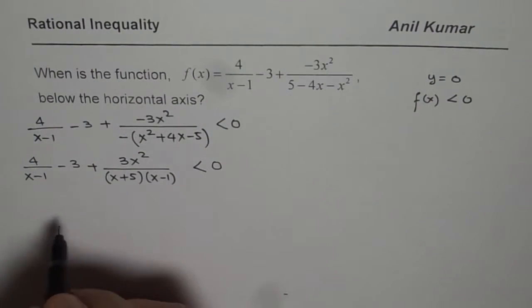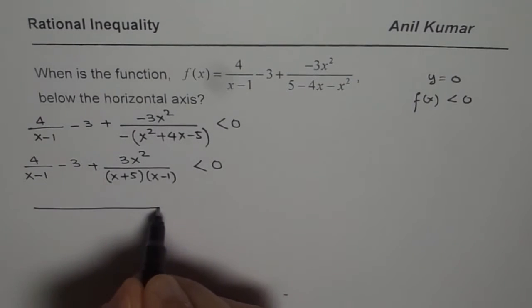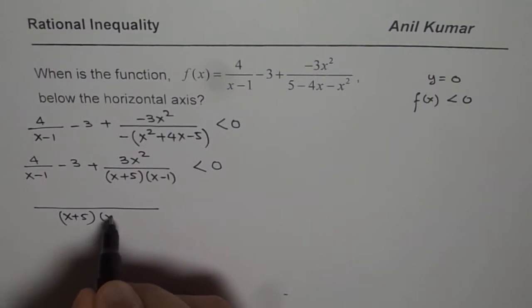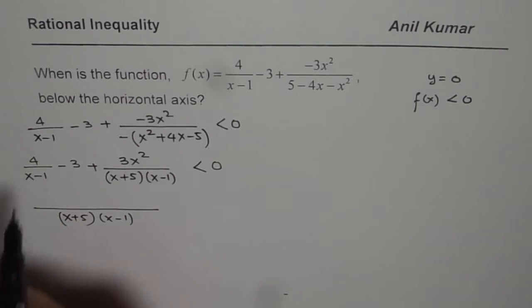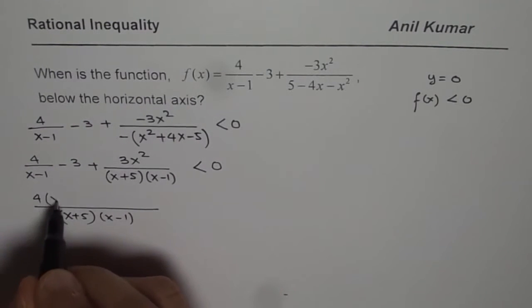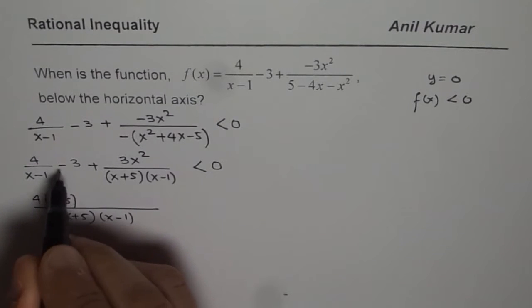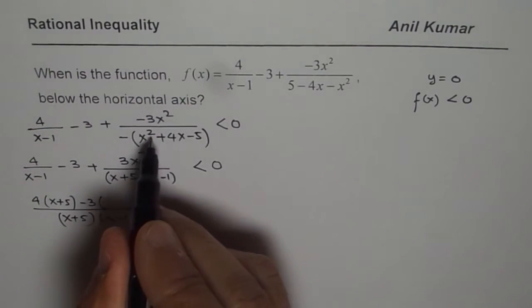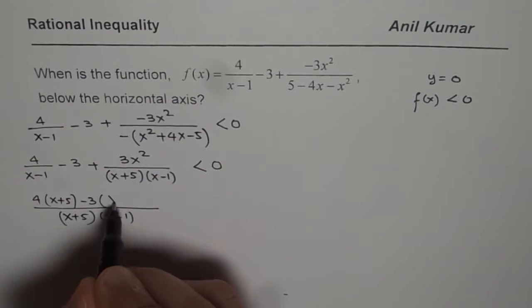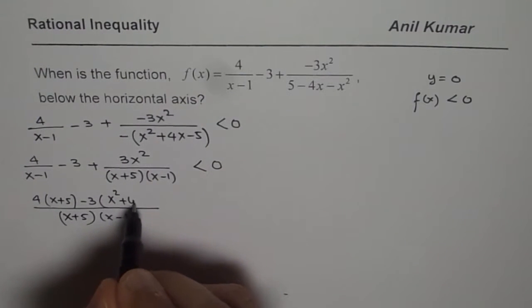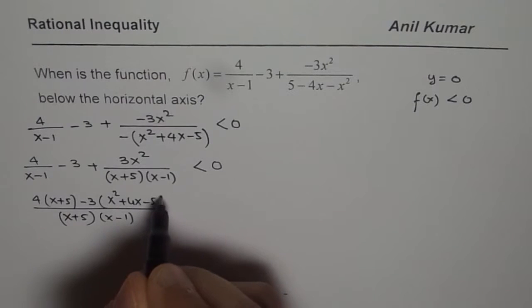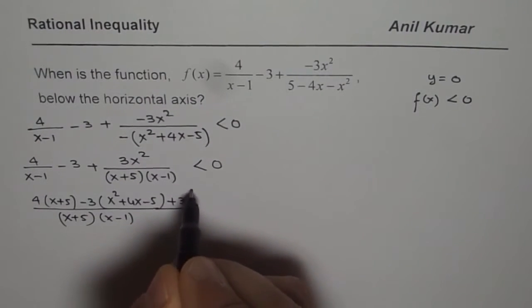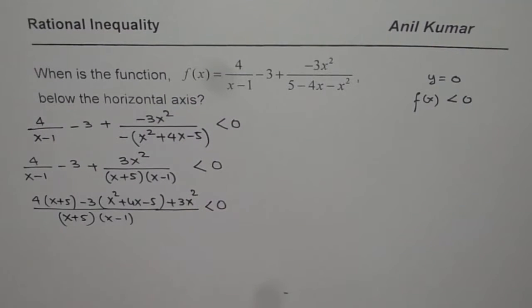Now the common denominator for us will be x plus 5 times x minus 1. So 4 should be multiplied by x plus 5, minus 3 should be multiplied by the product of these, which is x squared plus 4x minus 5. So let me write x squared plus 4x minus 5 plus 3x squared as such. Should be less than 0.